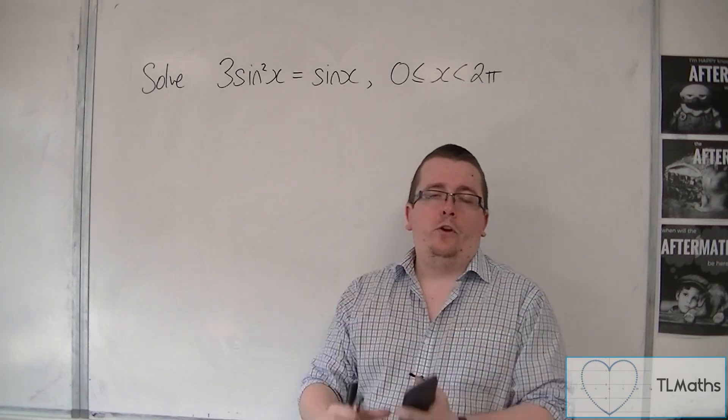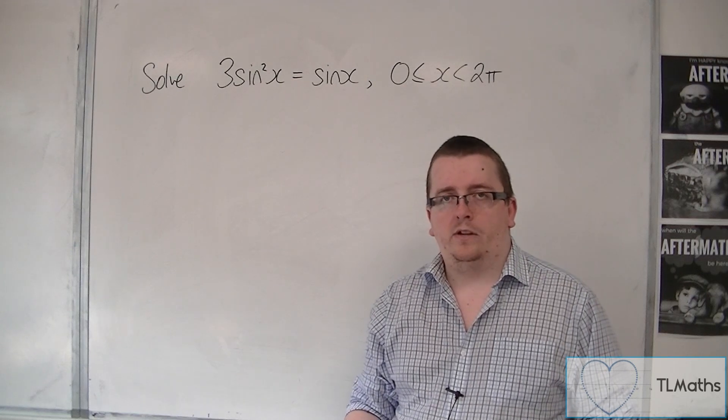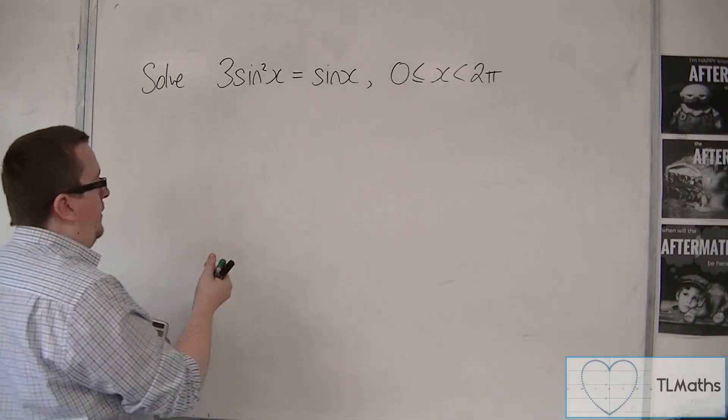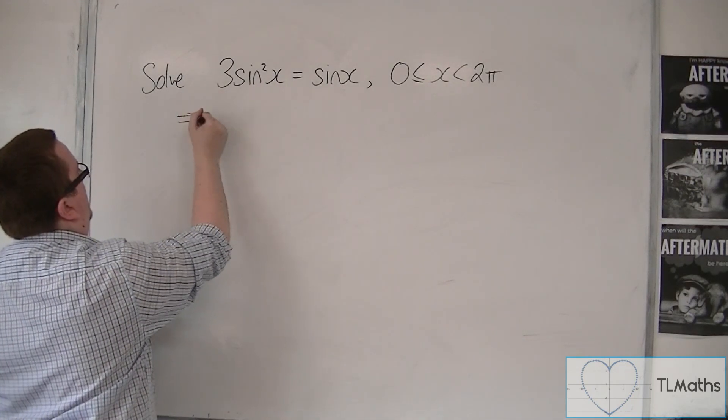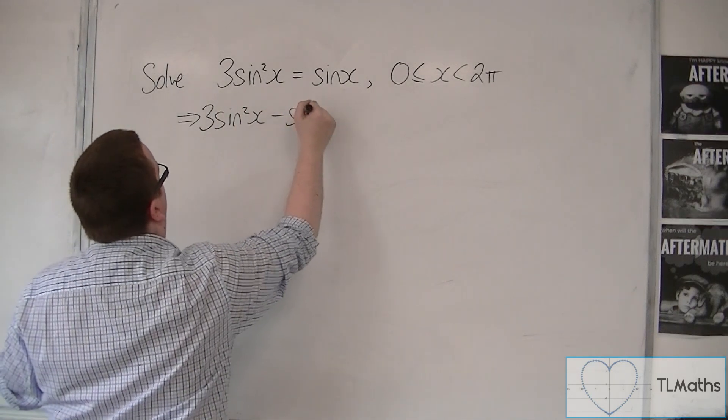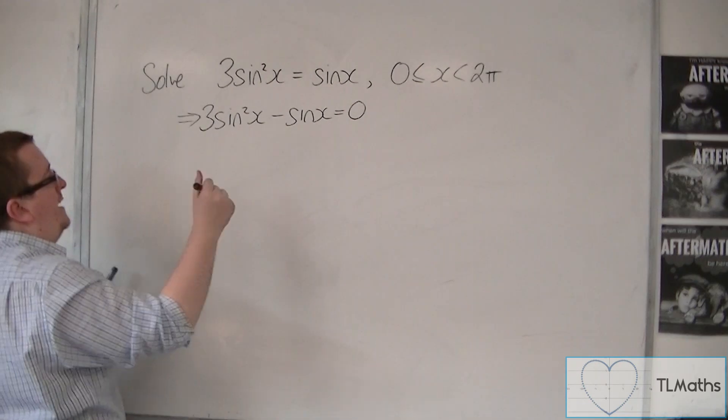We don't solve this by dividing through by sine x. We are going to move everything onto the left-hand side of the equal sign. So we're going to get 3 sine squared x minus sine x equals 0, and then we factorize.